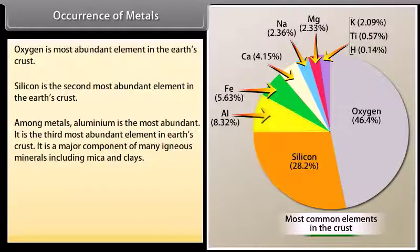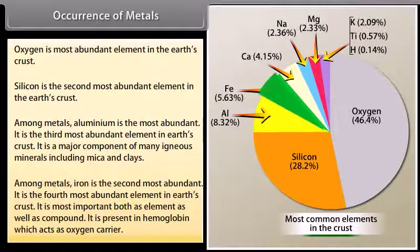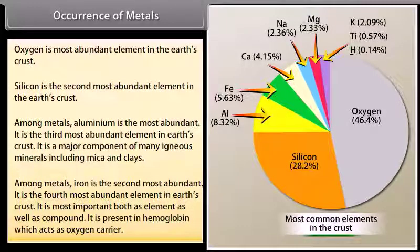Among metals, iron is the second most abundant. It is the fourth most abundant element in earth's crust. It is most important both as element as well as compound. It is present in hemoglobin which acts as oxygen carrier.